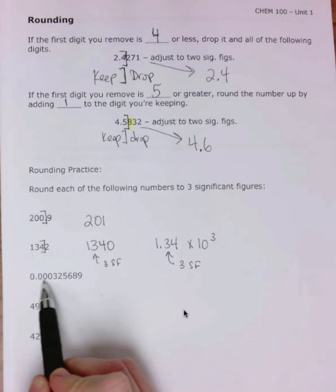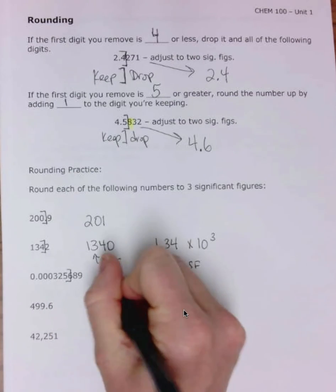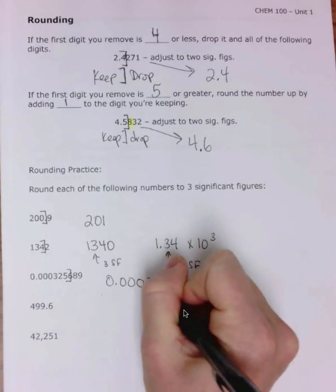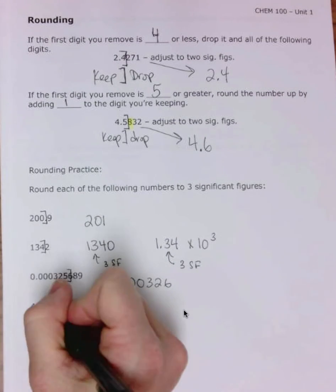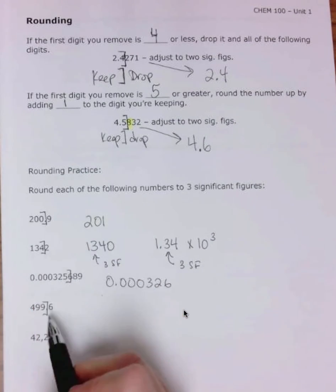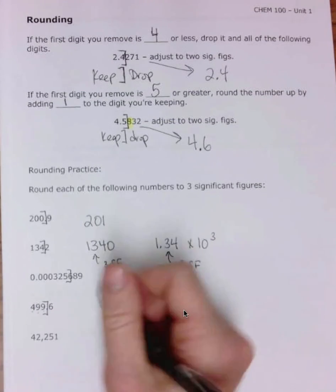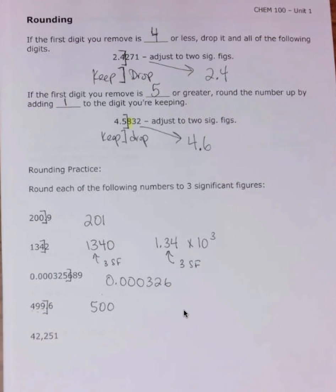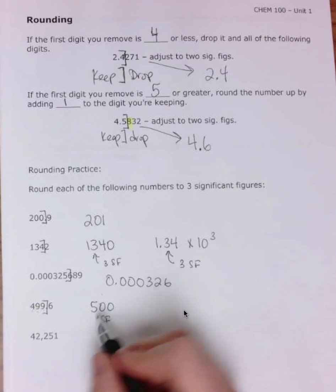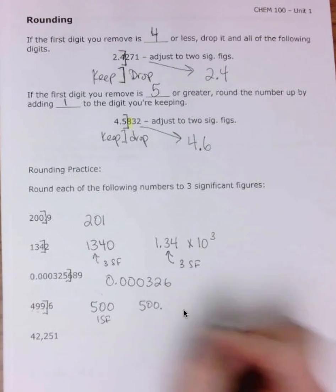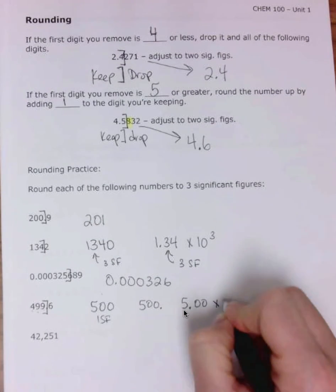For a number like 0.000325something, the leading zeros are all placeholders. You put your bracket three significant figures in and round up as needed — so you get 0.000326. For a number that rounds up to 500, be careful: that only has one sig fig since the zeros are placeholders. You need to add a decimal point to make it 500., or use scientific notation: 5.00 × 10².